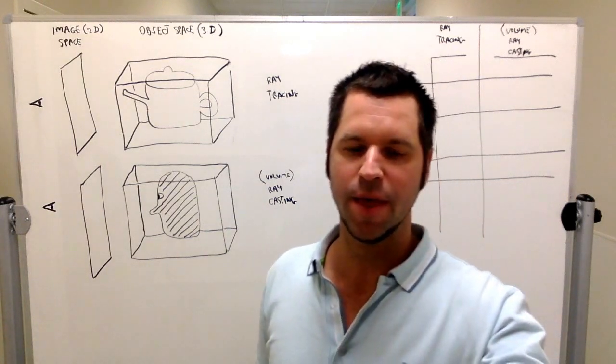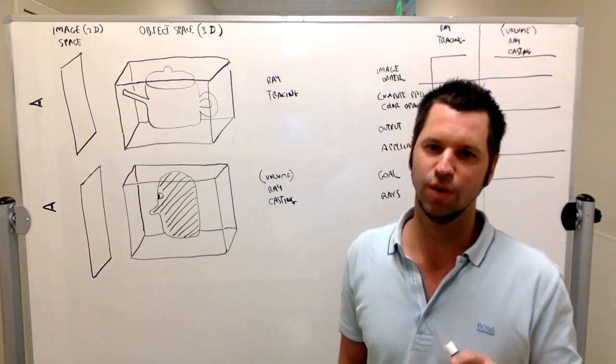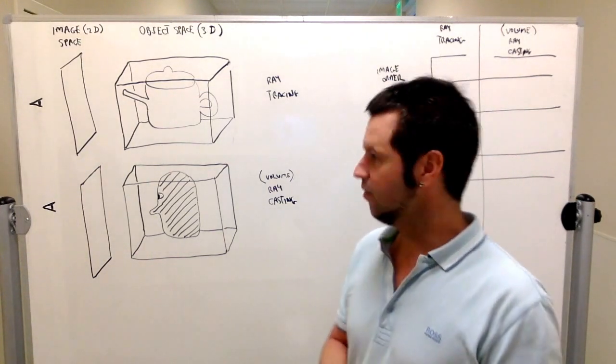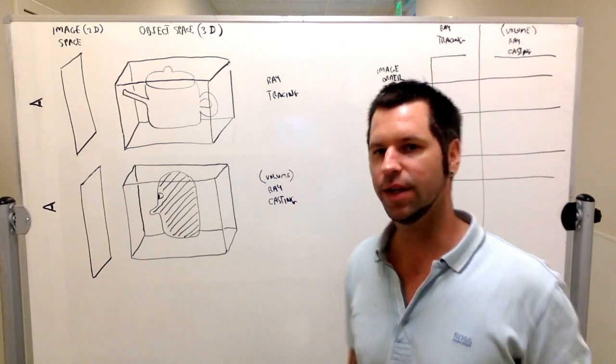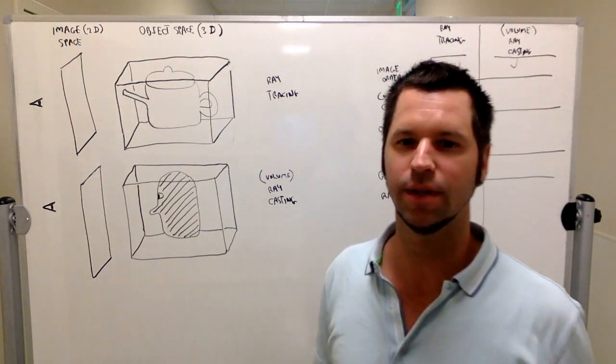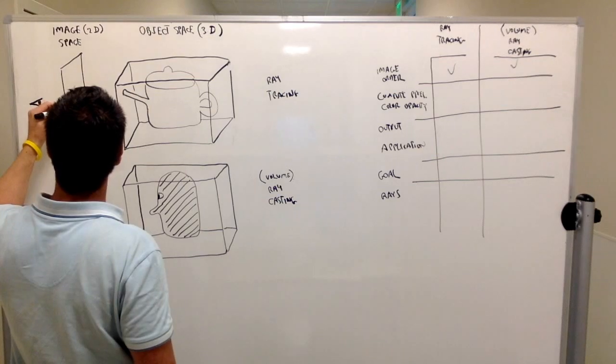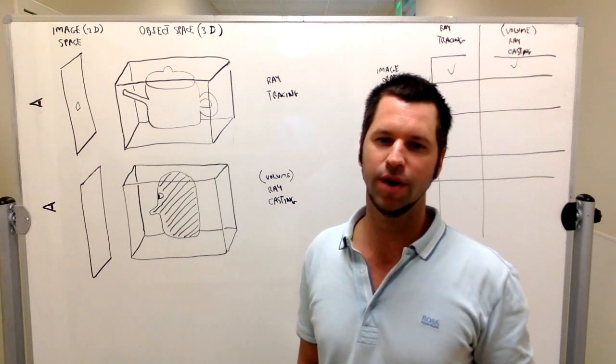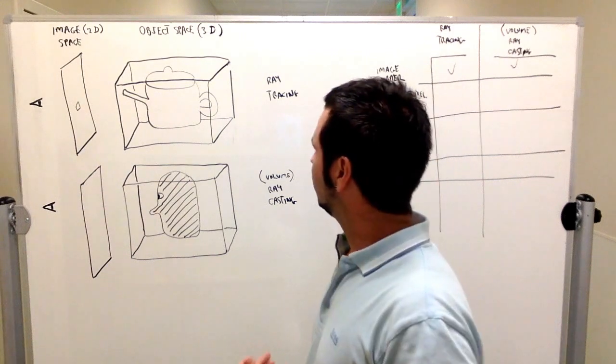Before we start with the differences, I thought it might be useful to list some things they have in common. They're both what we would call image order techniques. That means they traverse image space and perform some operation on every pixel in image space. That's what image order means.